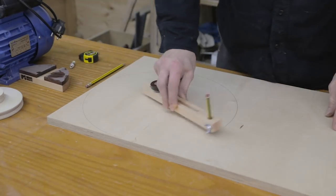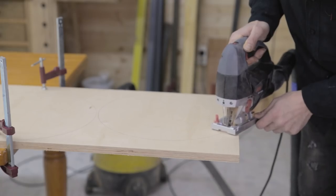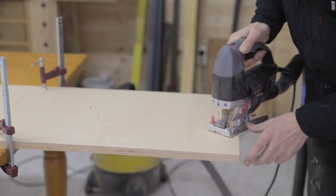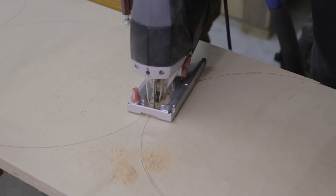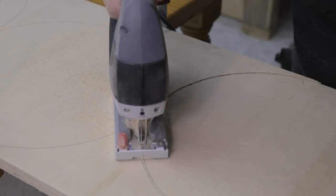I'll mark the circumference of the wheels on this board. Each wheel is made up of two pieces. I'll cut them two millimeters bigger with a jigsaw. Once cut, I can glue in the wheels.